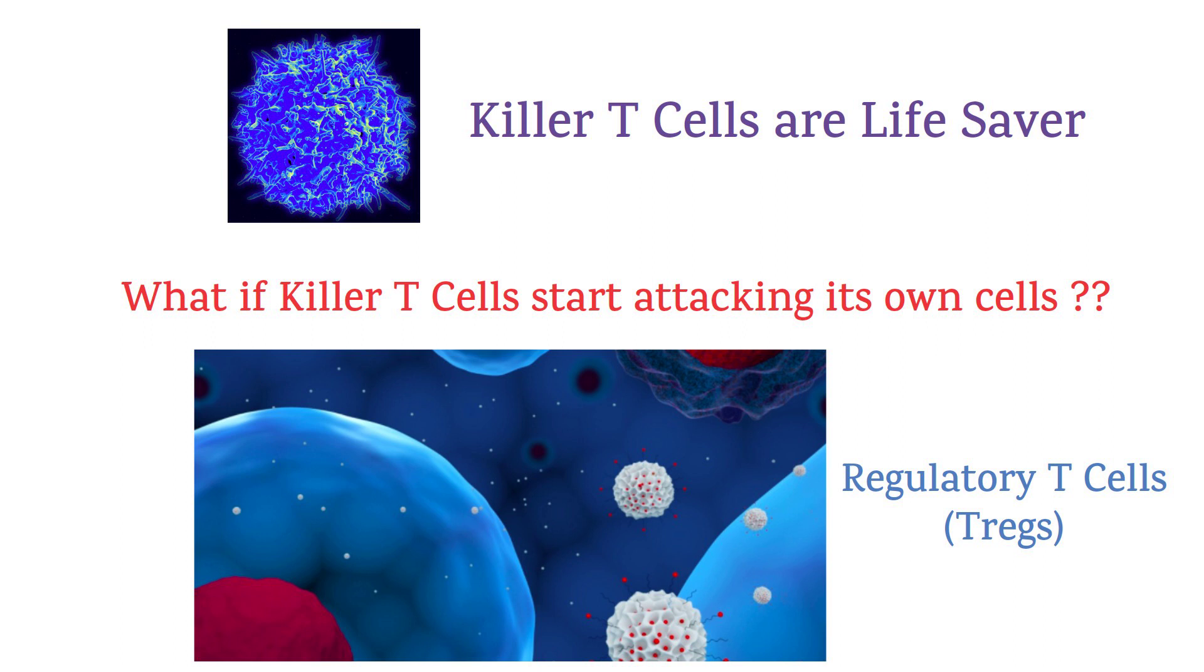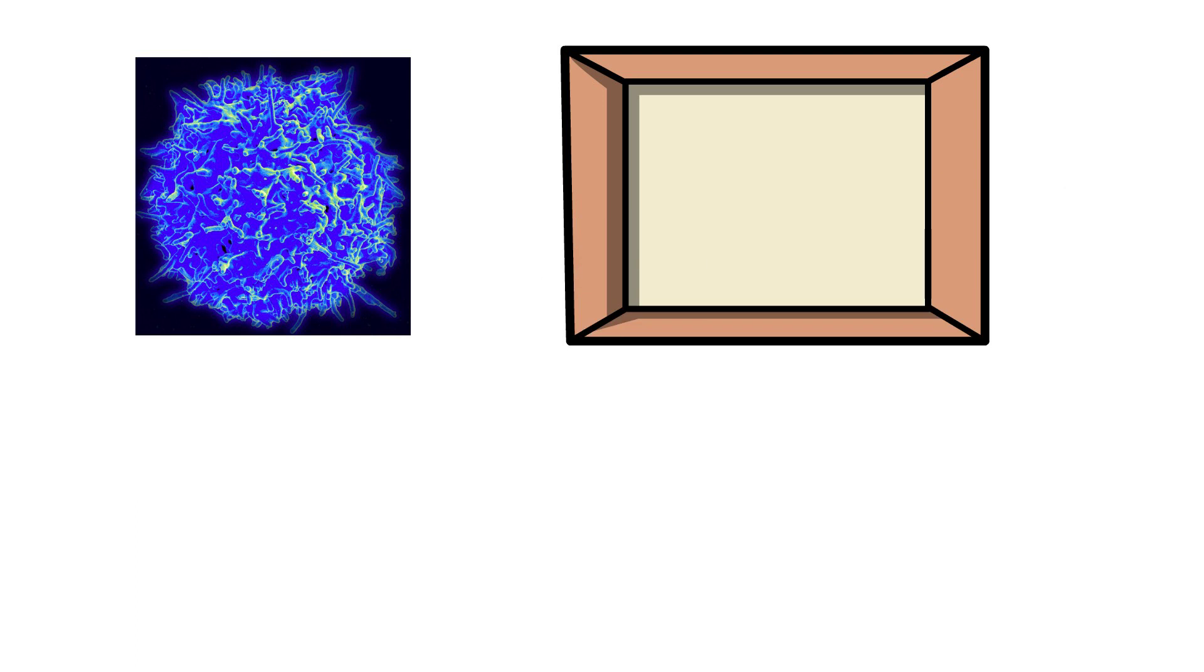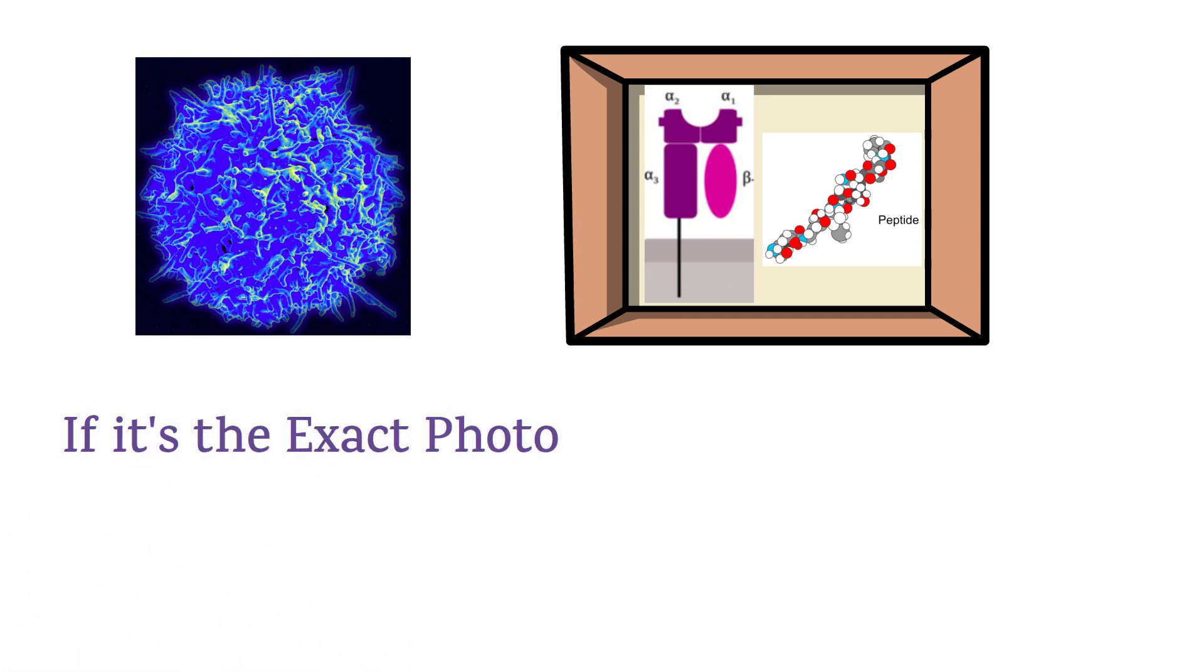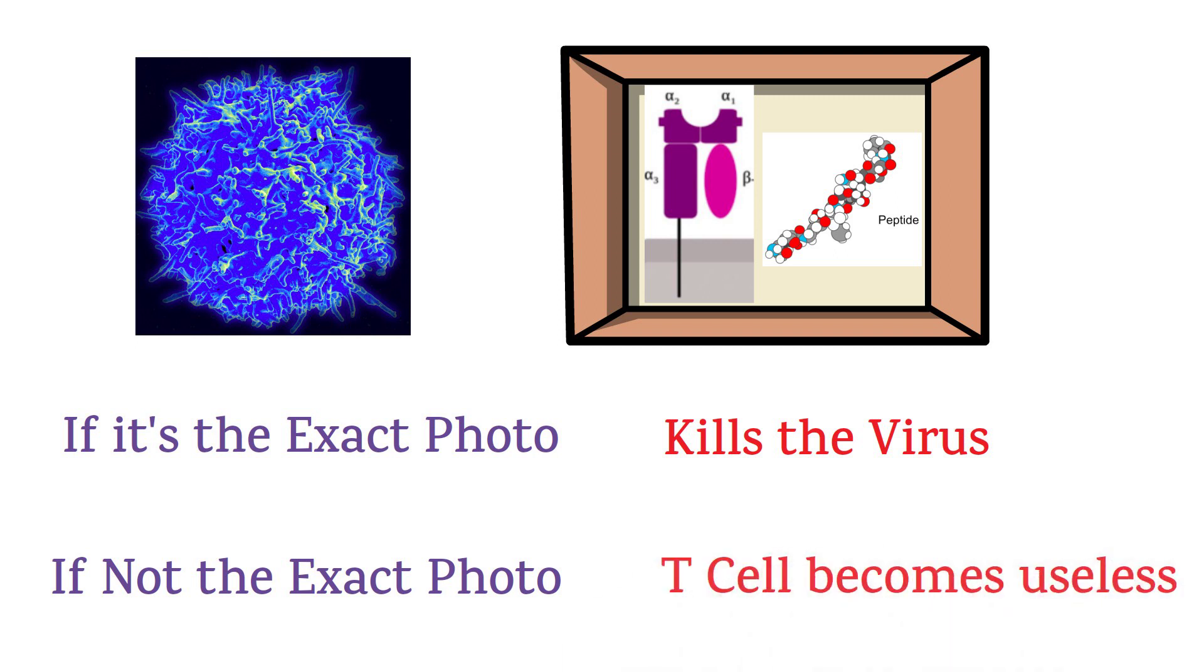T regs act as an immunosuppressant and also as a referee. They tell cytotoxic T cells to stop when they have destroyed the enemy. Naively speaking, killer T cells travel with a photograph, a specific MHC 1 peptide combination. If these killer T cells see the exact photo, these killer T cells shoot the enemy, period. But what if somehow the enemy is able to change his face? These killer T cells become useless. What happens next will blow your mind.